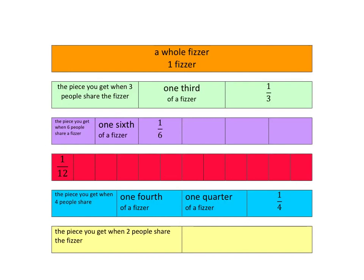The yellow one — we've just cut it into two pieces, so two people are sharing this fizzer. It should be one two-th, but in English the special name is one half, and we write it as one over two. That two at the bottom tells us we're sharing the fizzer with two people — we've cut it into two pieces and each person is just getting one of those two pieces.